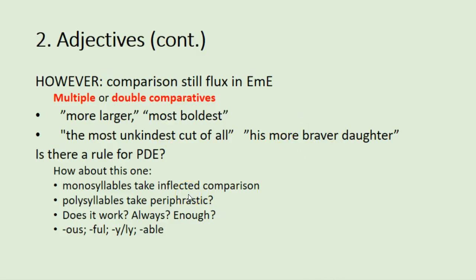Here's a question for present-day English: is there a rule for when we use the inflected comparison versus the periphrastic? The rule of thumb is that monosyllables take the inflected comparison, but polysyllables take the periphrastic. Does it also depend on what adjective ending we're using? Some endings come from Old English, such as -ful, -y, or -le; others come from French, such as -ous or -able. Which take inflected and which take the periphrastic?